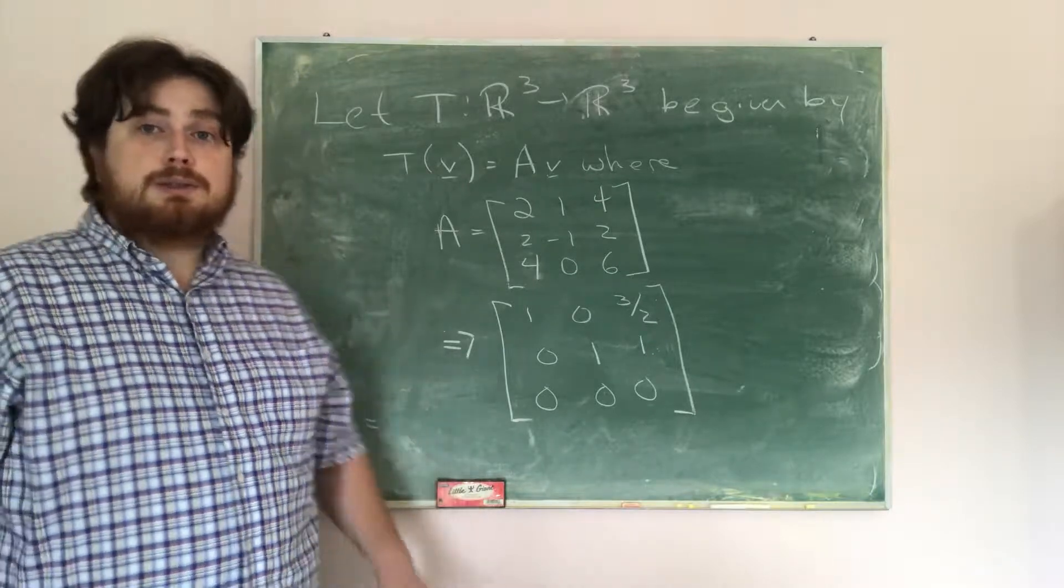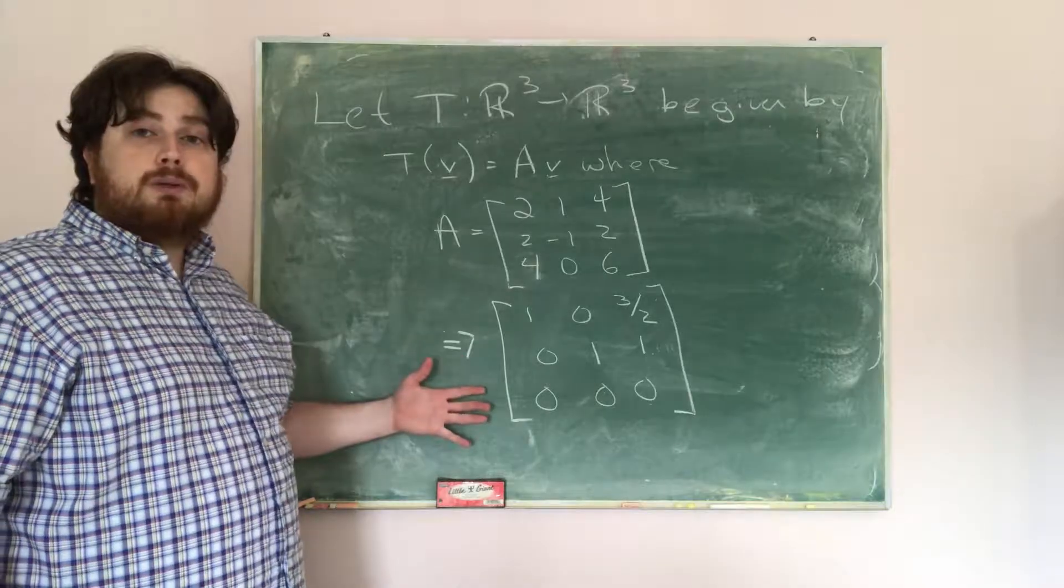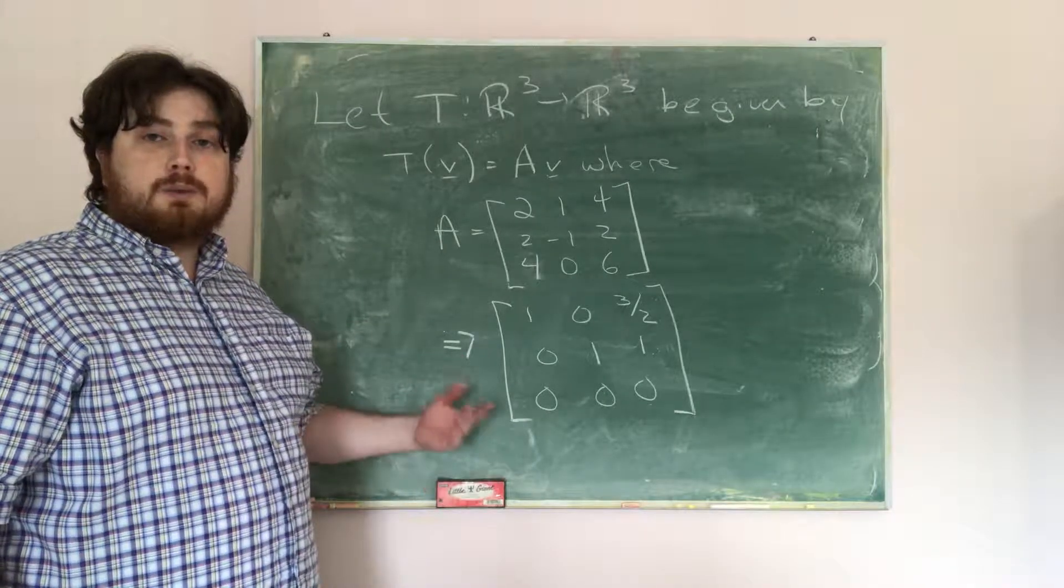and then we're going to want to determine is this a one-to-one onto isomorphism or none of the above. The first step in answering any of those questions is to find the row reduced form of this matrix. So I took this and I row reduced it, and again, if you need help with that, I would look over the videos on row reduction.